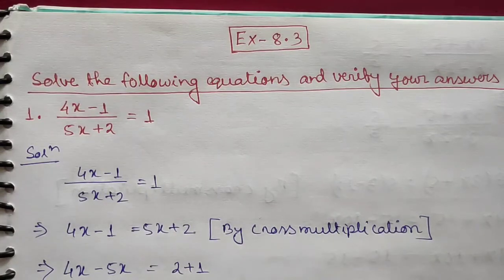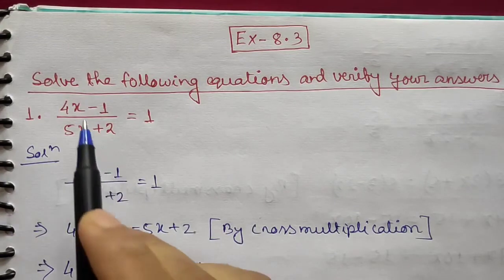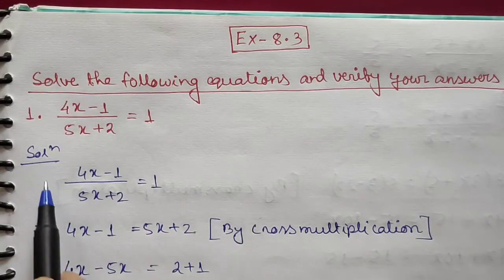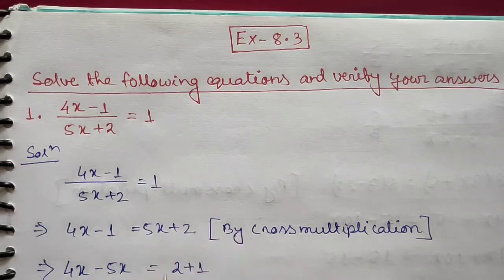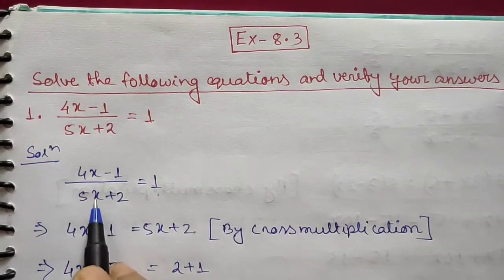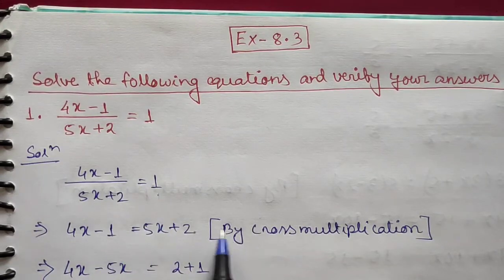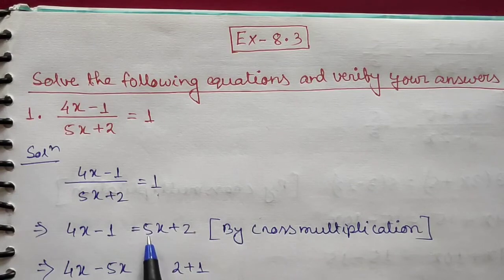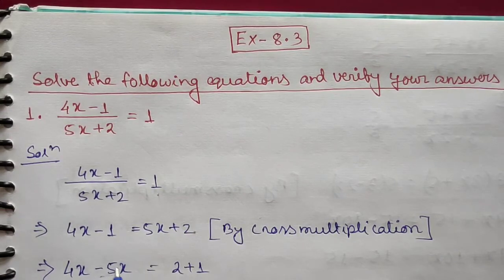Let's start with question number one: (4x - 1) / (5x + 2) = 1. The solution uses cross multiplication. Here the denominator on the right side is 1, so we multiply 4x - 1 by 1 and 5x + 2 by 1. Then we use the transposing method to take variable terms to one side and constant terms to the other side.